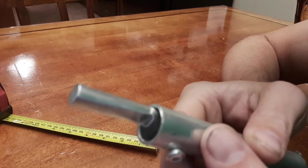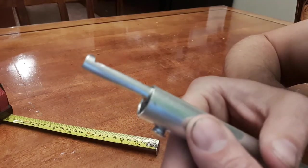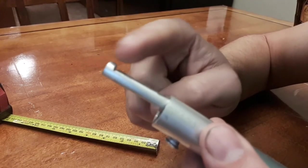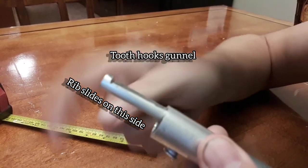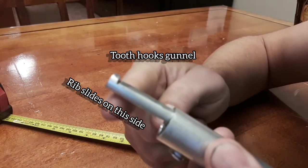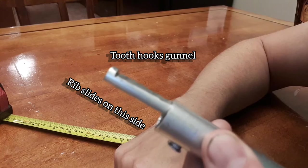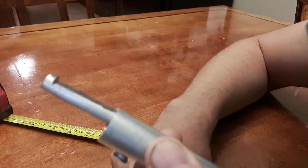This goes under the gunnel so that the rib can slide along here after you mark it and cut it. Hopefully that helps guys, thanks for watching.